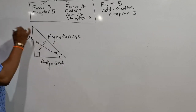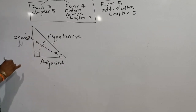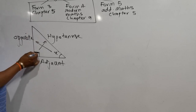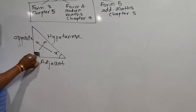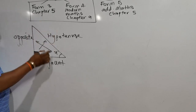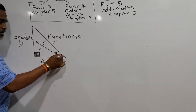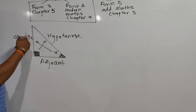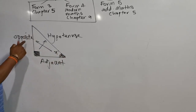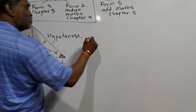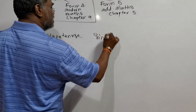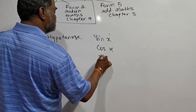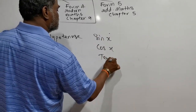This is very important — everybody must know. Repeat again: opposite the 90 degrees is hypotenuse, the angle beside is called adjacent, and opposite the acute angle is called opposite. So the formulas you are going to remember are sin x, cos x, and tangent x.